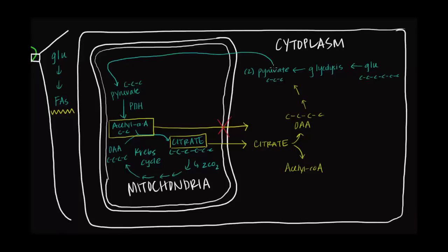And notice that pyruvate can essentially, once it goes back to the mitochondria, it'll be turned into acetyl-CoA, and this entire cycle can continue.